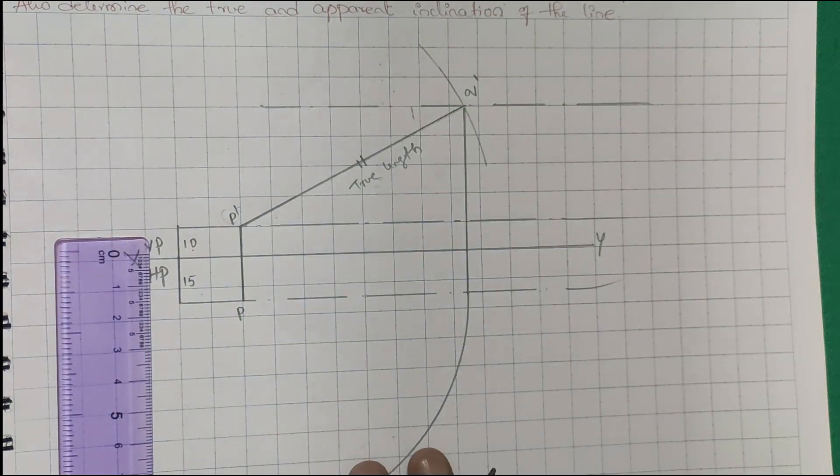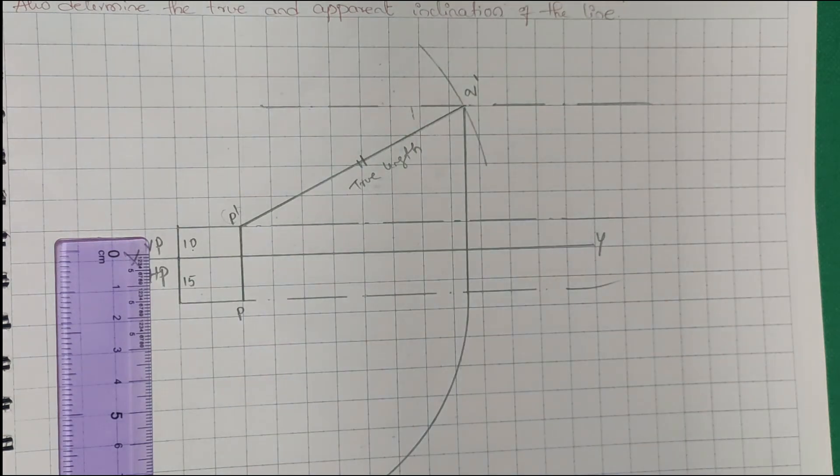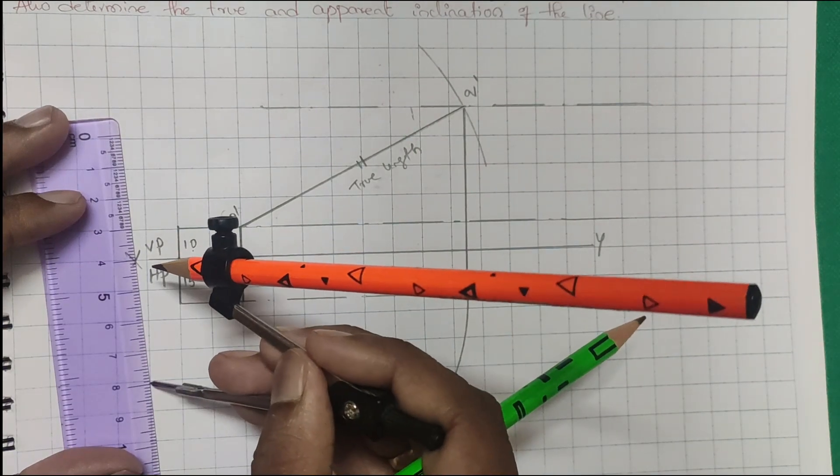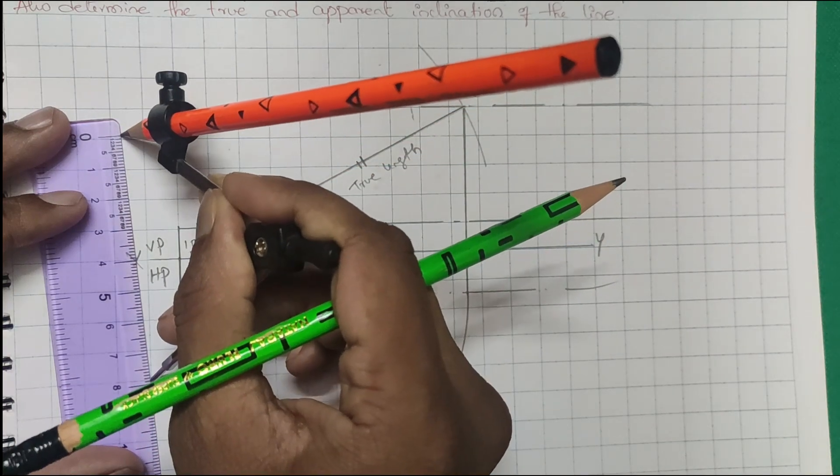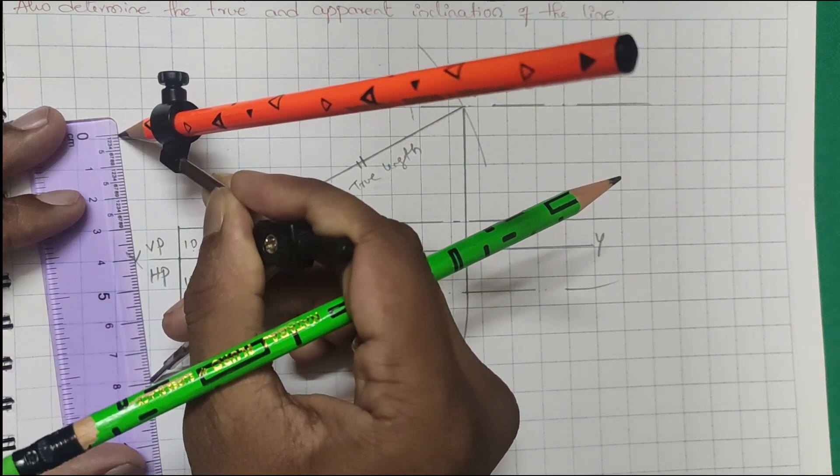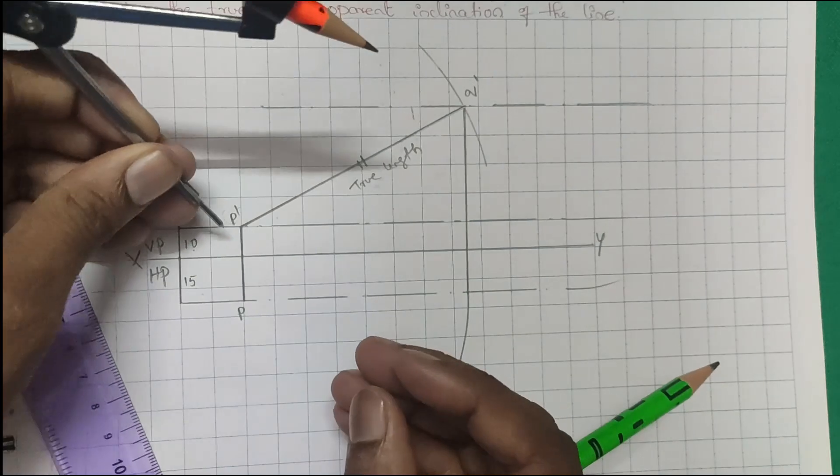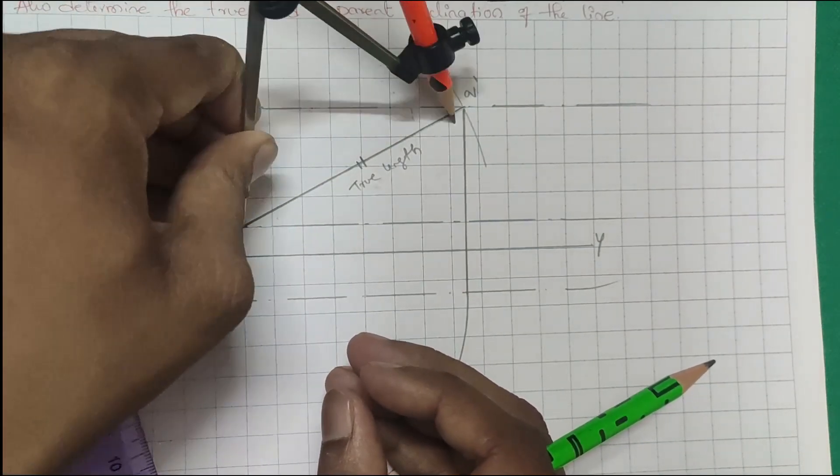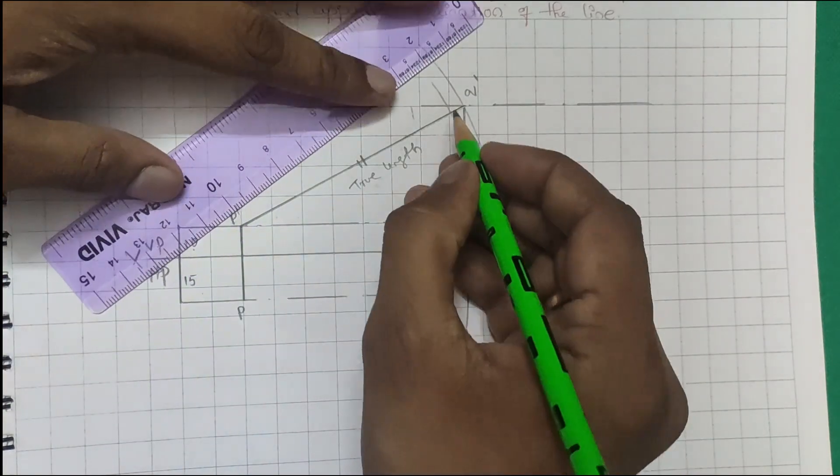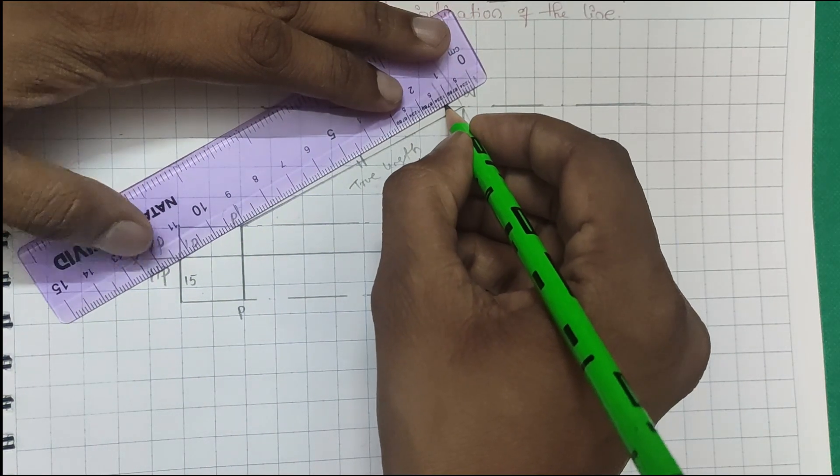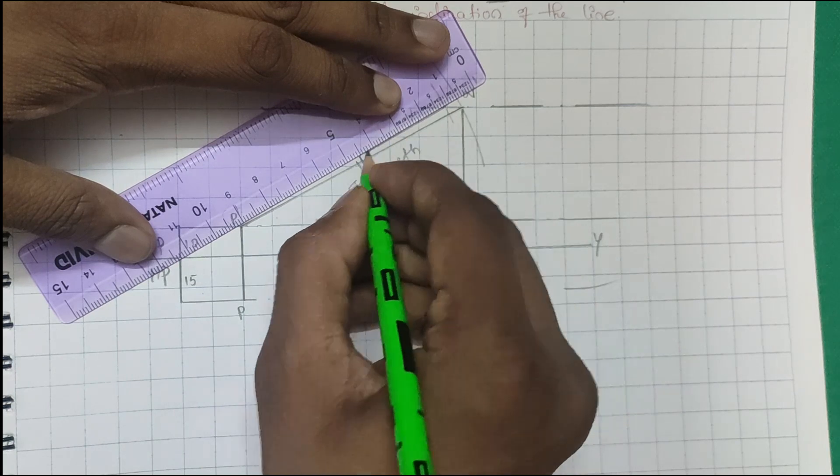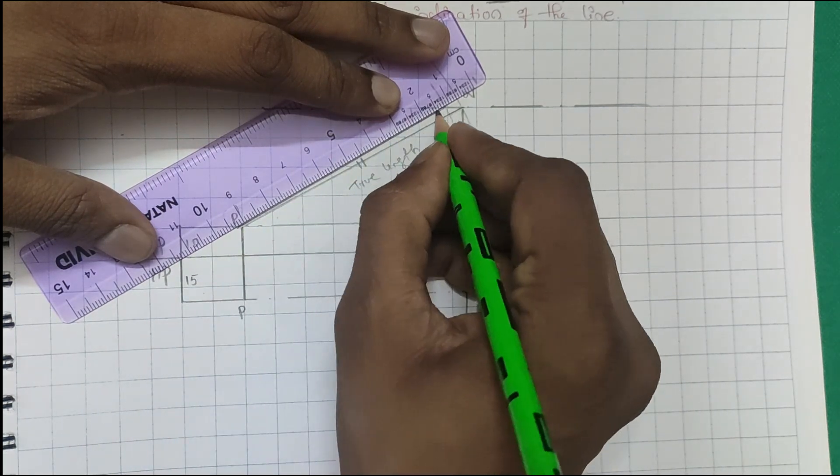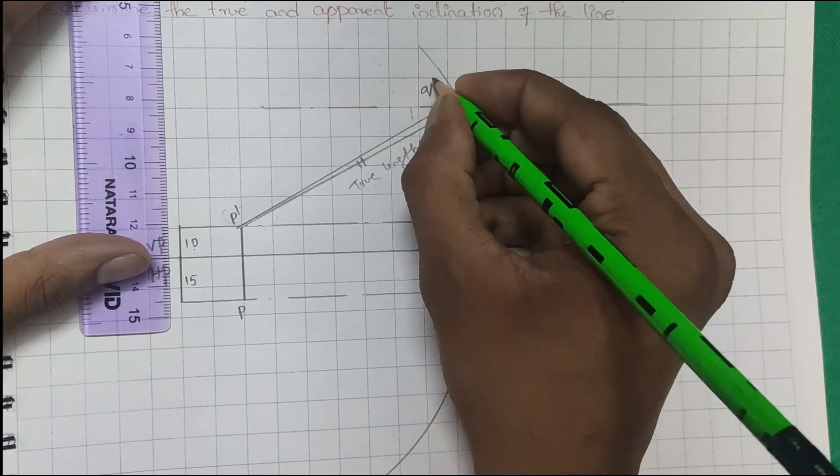Just measure 80mm and cut an arc here. Then join this. This is your Q double dash. This is the apparent length.